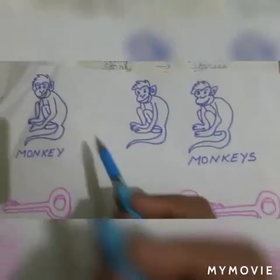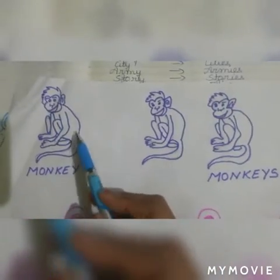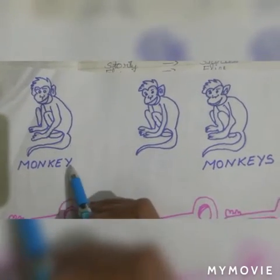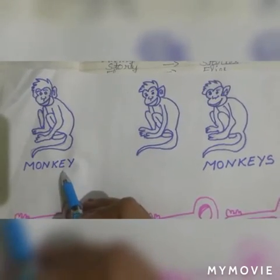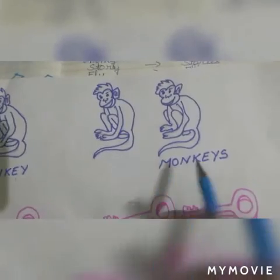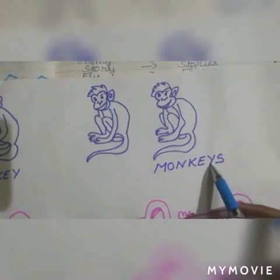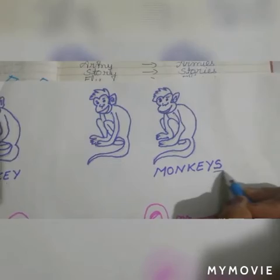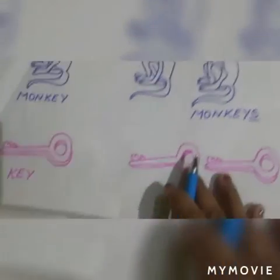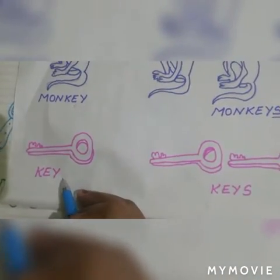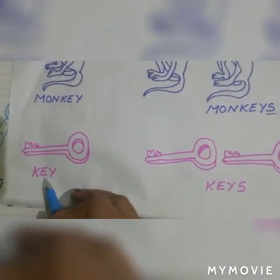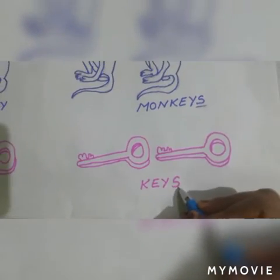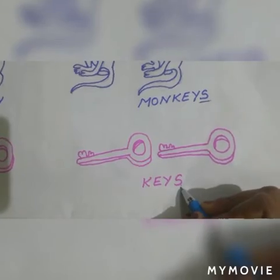Let's see here also. One monkey is here, so MONKEY. As we can see, Y is preceded by a vowel, so while changing into plural form we add only S. In the same way, KEY — E is also a vowel, so here also we simply add S.